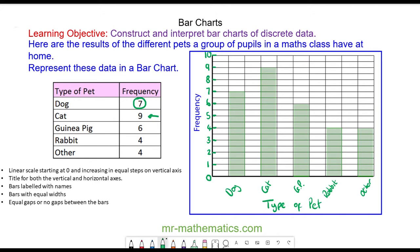Here we have a bar chart of pet types. The highest bar is cat, which is the most common—the modal average type of pet. Rabbit and other are the least common, with the shortest heights.